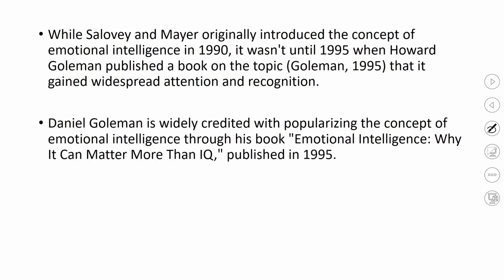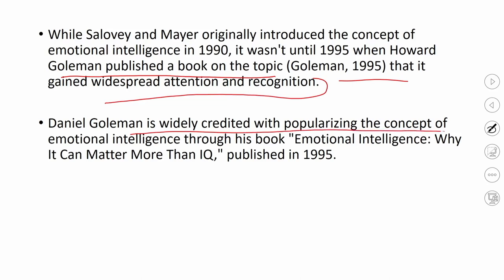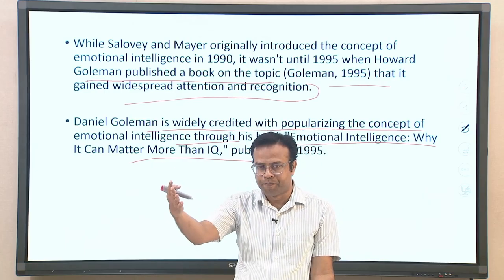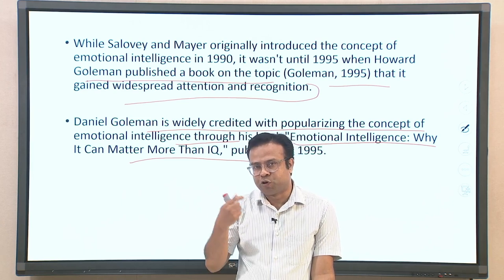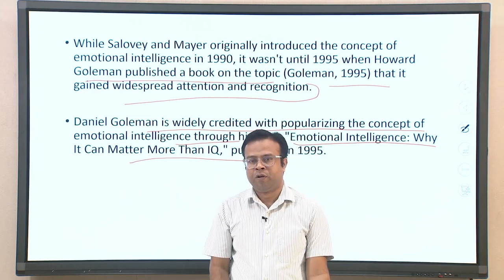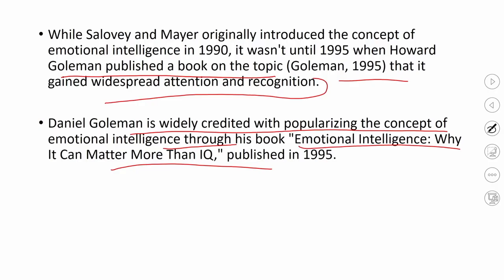While Salovey and Mayer originally introduced the concept of emotional intelligence in 1990, it was not until 1995 that Daniel Goleman published a book on this topic that became a bestseller. Through this book — titled 'Emotional Intelligence: Why It Can Matter More Than IQ' — Goleman popularized the whole concept of emotional intelligence, which then received much more research attention.